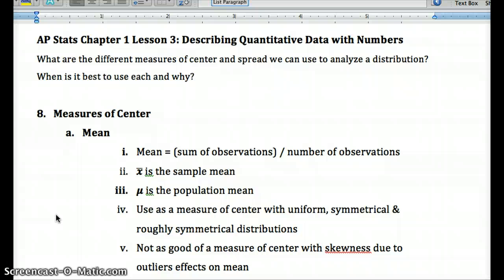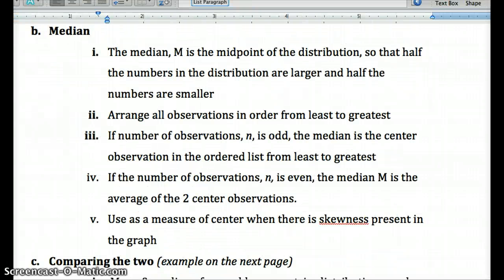So outliers on the high side will bring the mean way up. On the low side, they'll bring it way down. So in the presence of skewness, we will go with the median, since outliers don't affect the median.